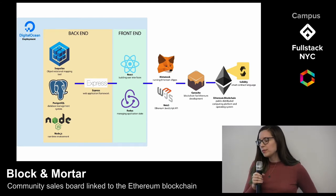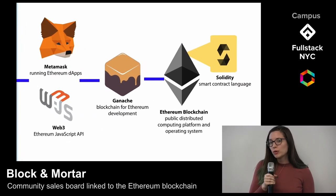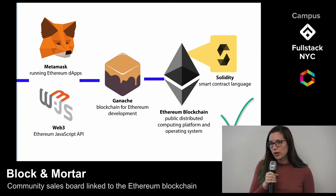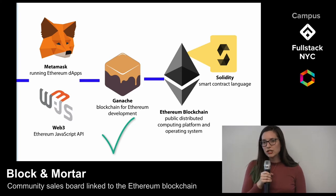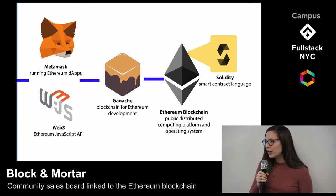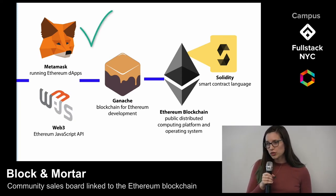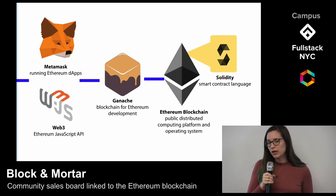We had to familiarize ourselves with five new technologies in order to write to and interact with the blockchain. We used the Solidity language to write our smart contract, which allowed us to codify the way we were interacting with the blockchain and the information we were storing there. We used Truffle and Ganache as our Ethereum development environment to test our smart contract. Then we used MetaMask to allow our users to log into our app and access it using their personalized Ethereum digital wallet. Finally, we used Web3 to connect our app to our blockchain and communicate with our smart contract there. So that's our stack.